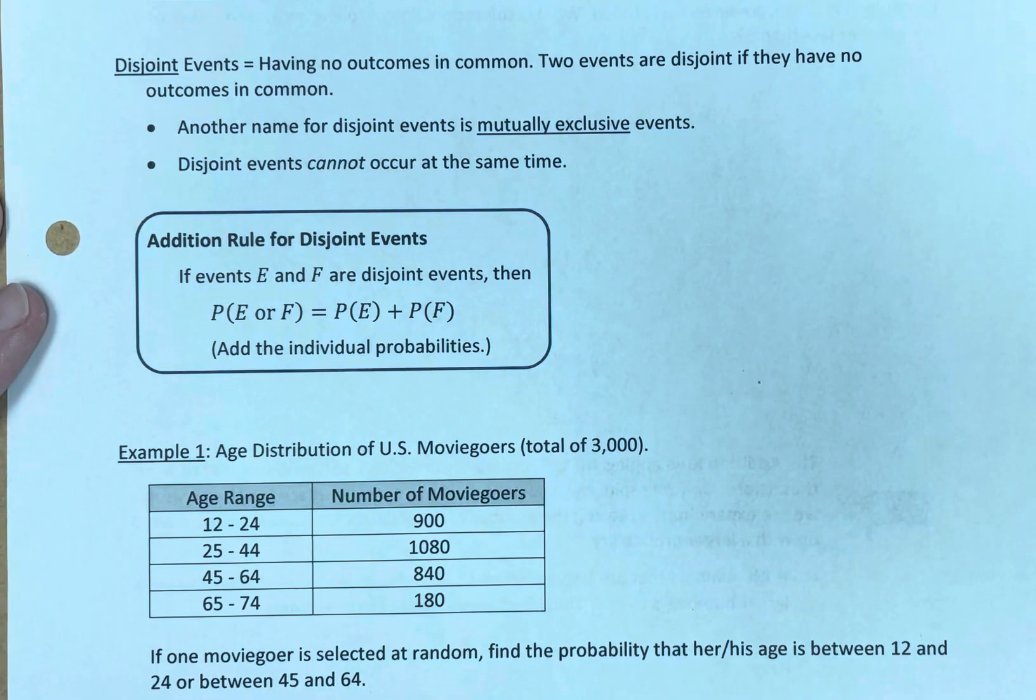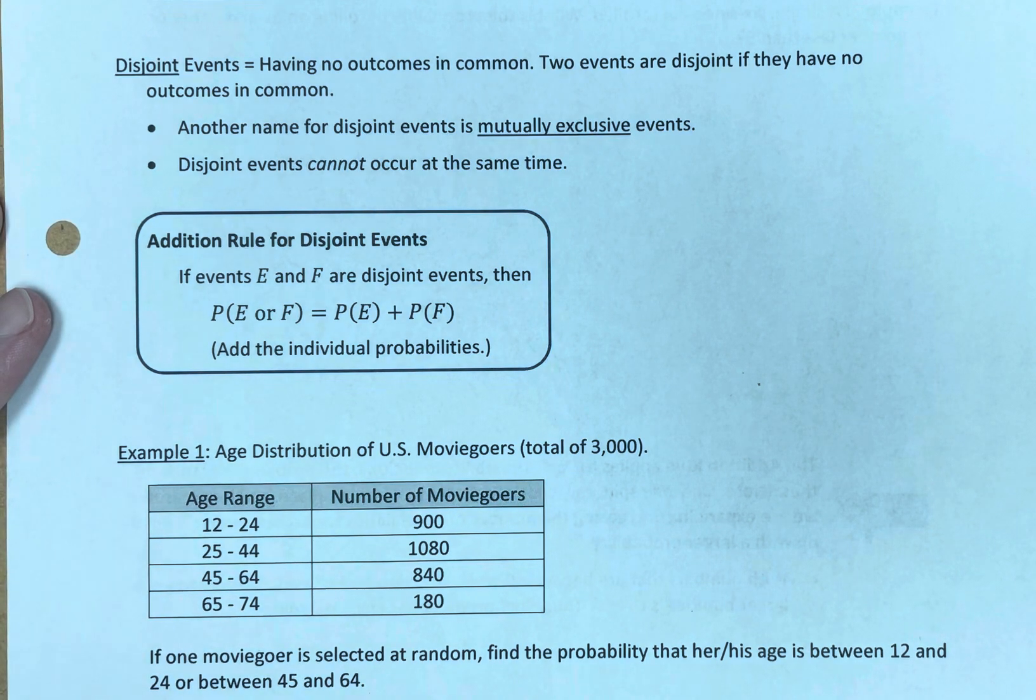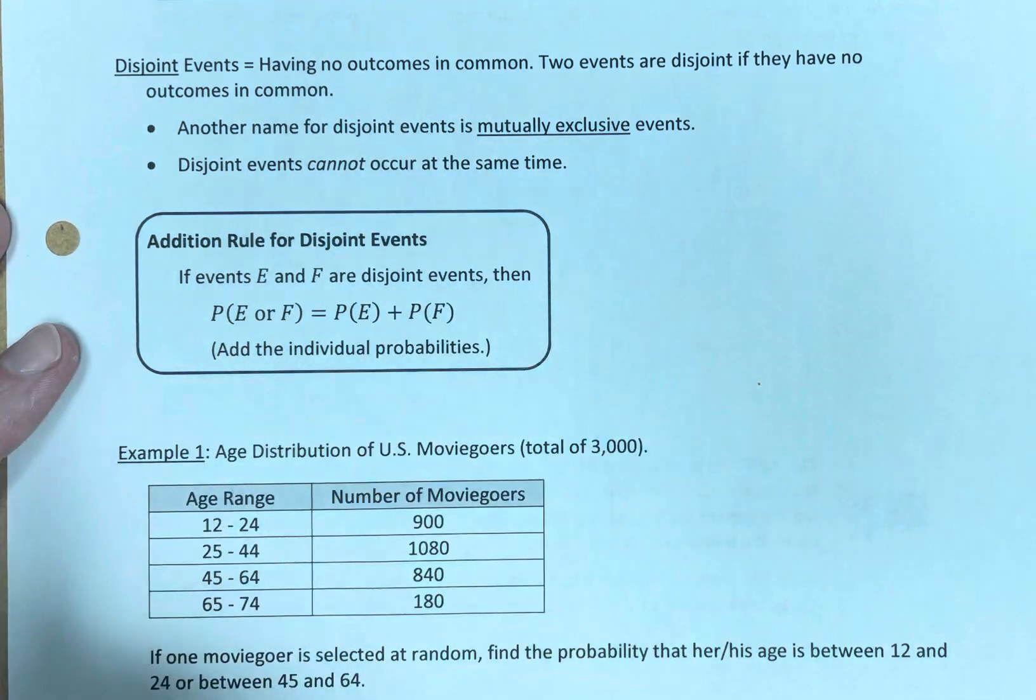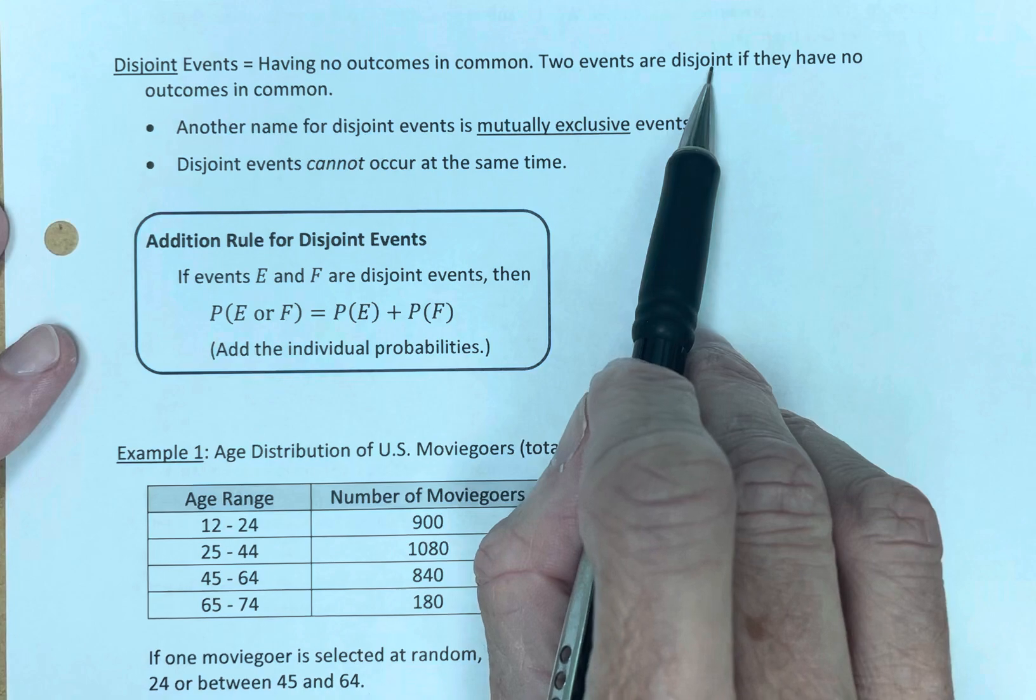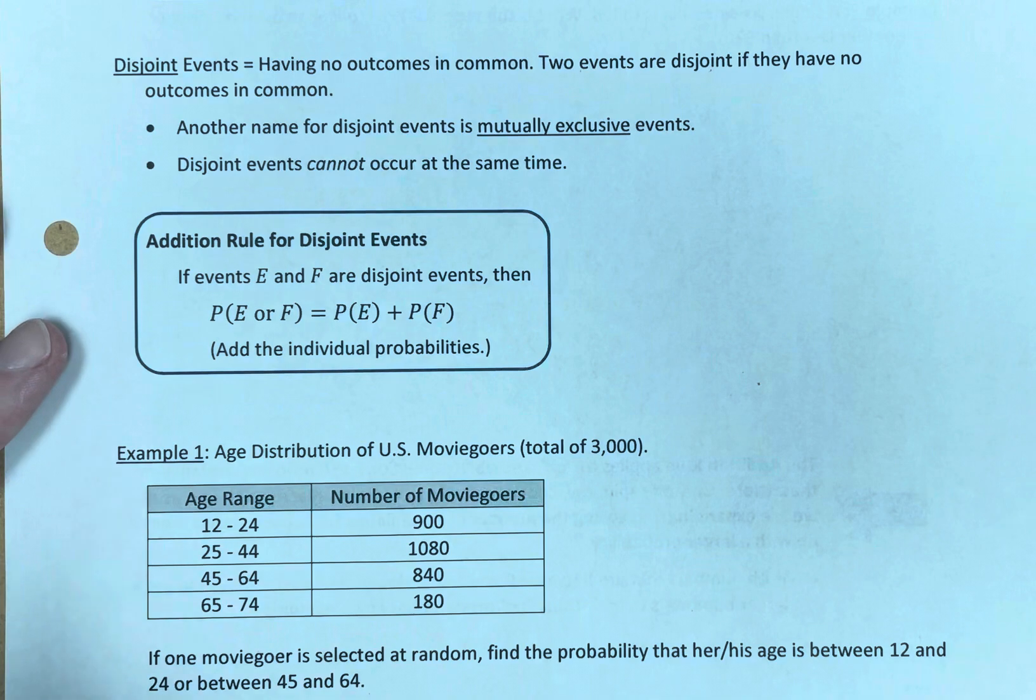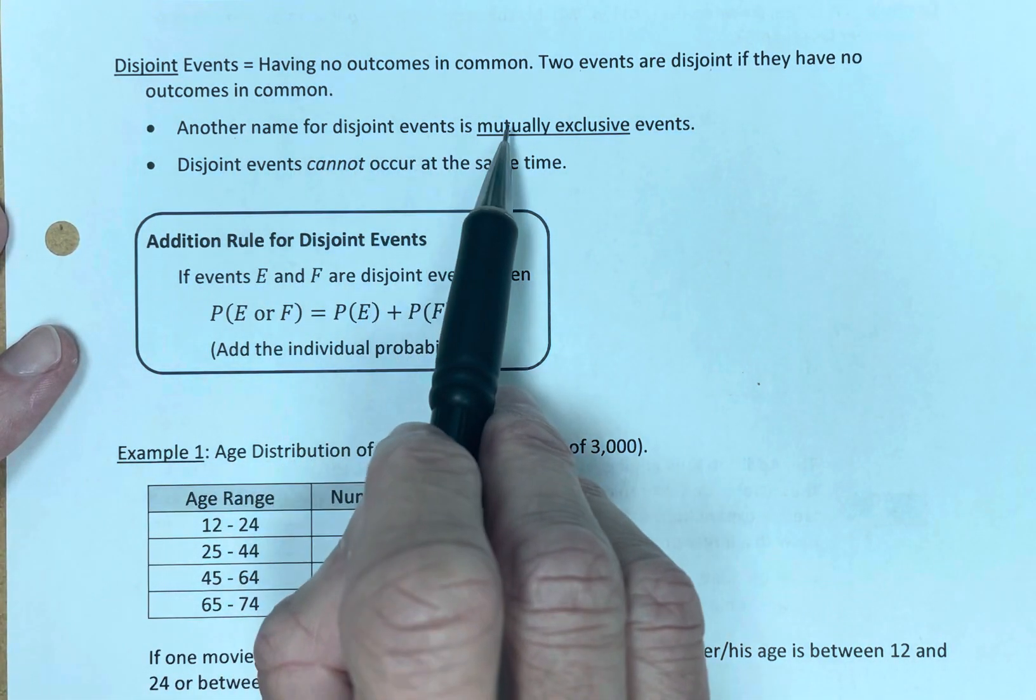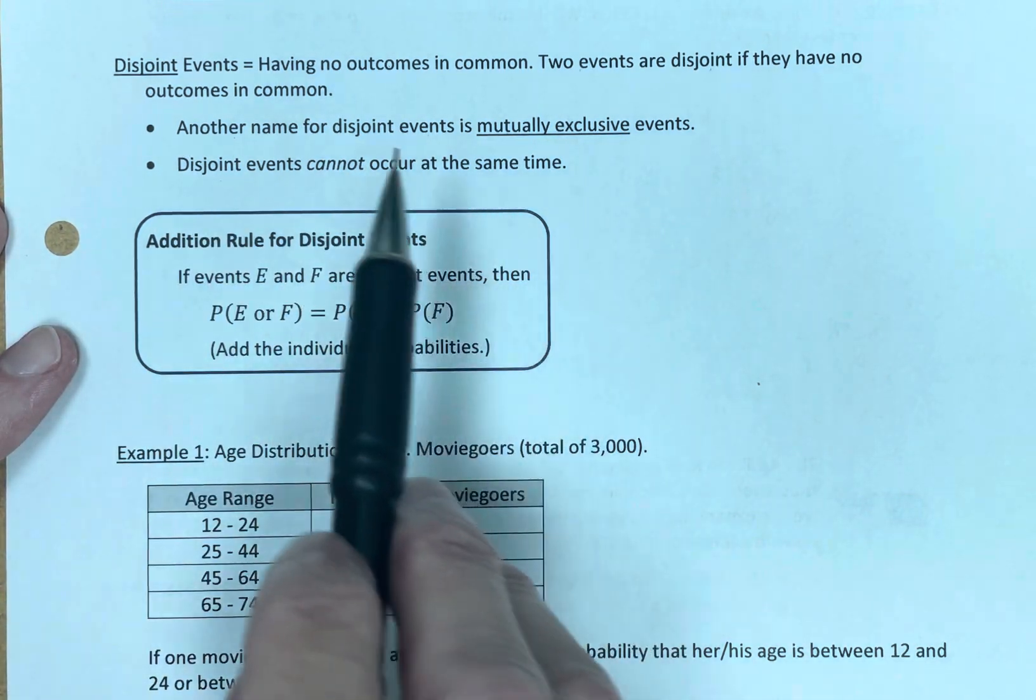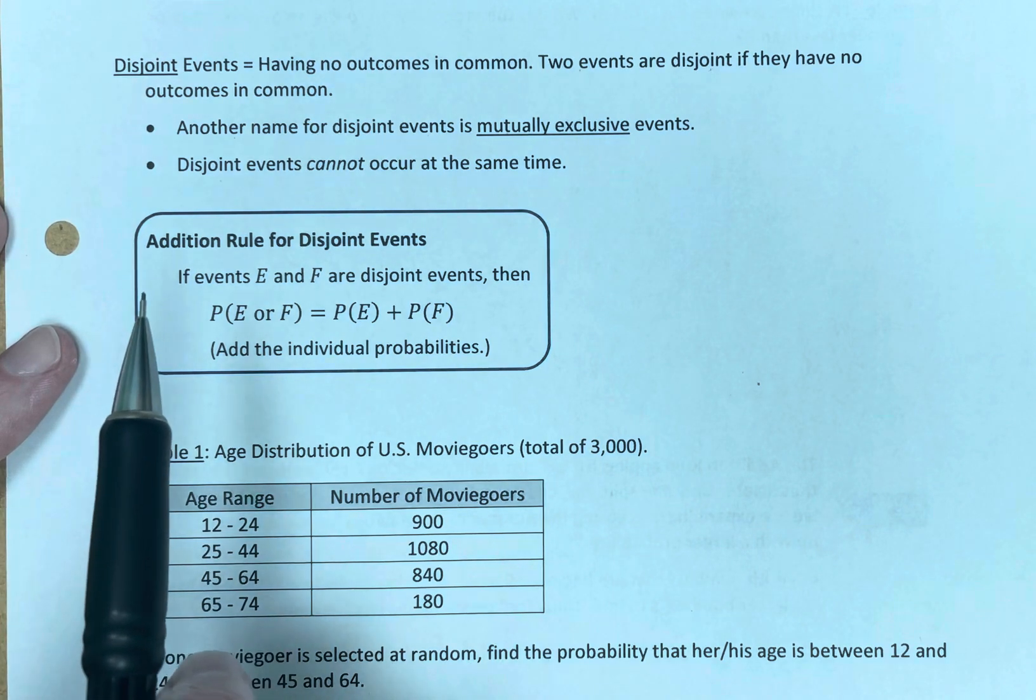So what does disjoint mean? We want to talk about disjoint and non-disjoint. Disjoint events have no outcomes in common. Two events are disjoint if they have no outcomes in common. Another name for disjoint is mutually exclusive. Disjoint events cannot occur at the same time, and we'll see an example of this in just a moment.